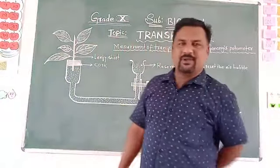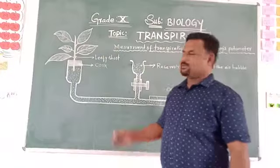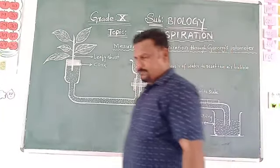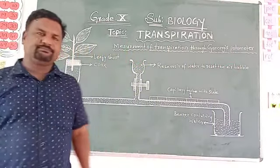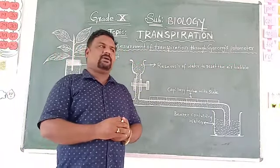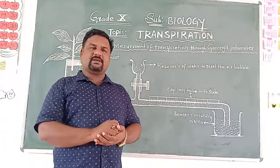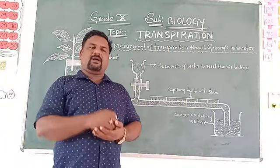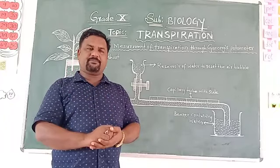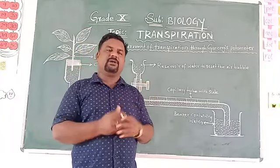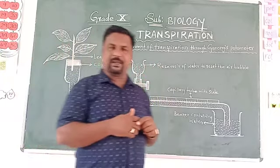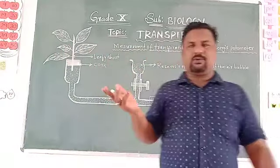Good morning children, welcome back to the Biodiversity class. In the previous class we discussed about transpiration. The definition of transpiration is a physical process in which the loss of excess amount of water from a plant body in the form of water vapor through the stomata — this process we call transpiration.